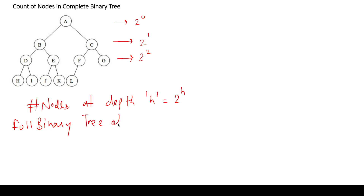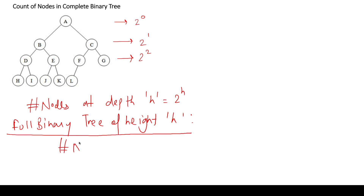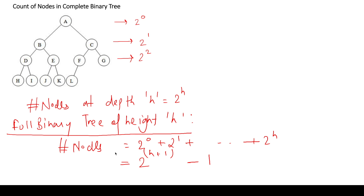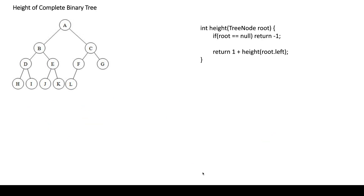For a full binary tree of height h, we can find the total number of nodes in O(1) time using a formula. The total is 2^0 + 2^1 + ... + 2^h, which is a geometric progression. This evaluates to 2^(h+1) - 1. So for a full binary tree of height h, the total number of nodes can be found in O(1) time — this is what we will use.